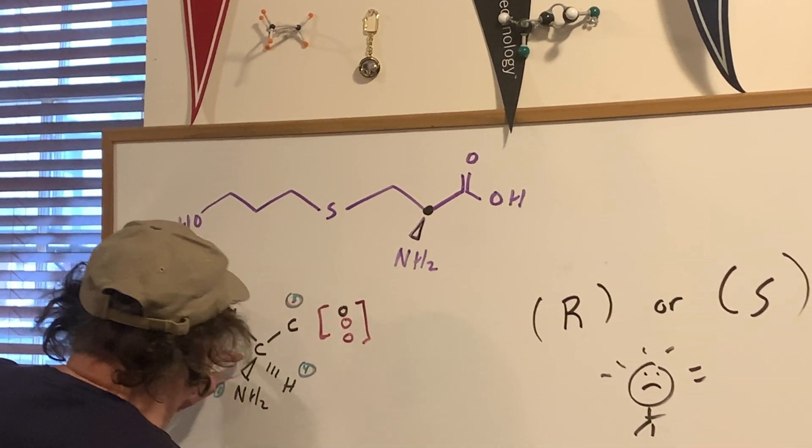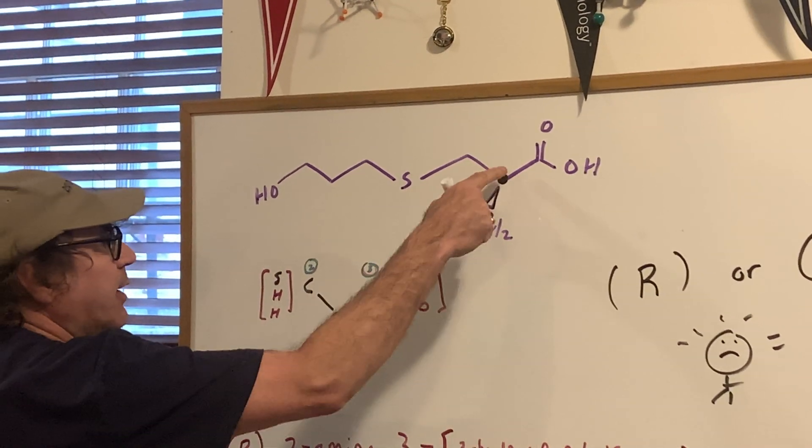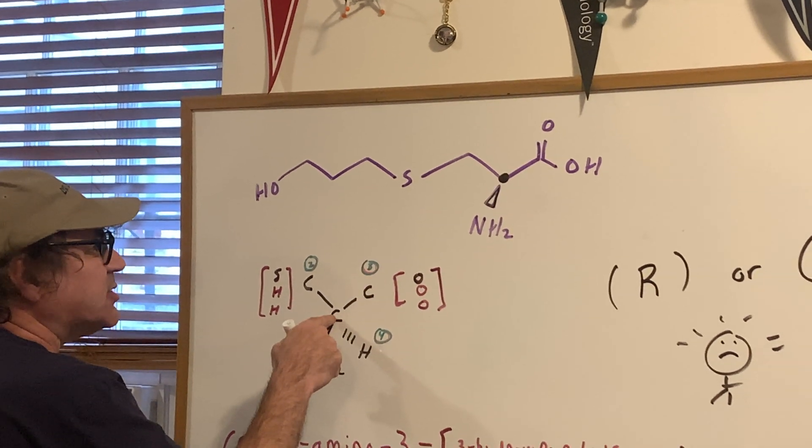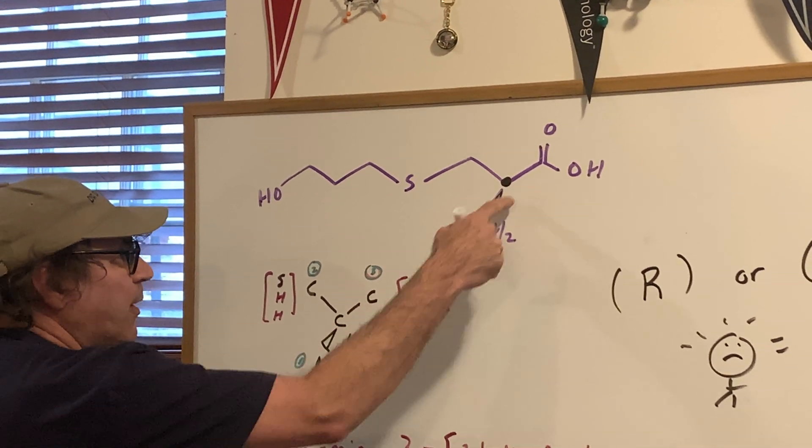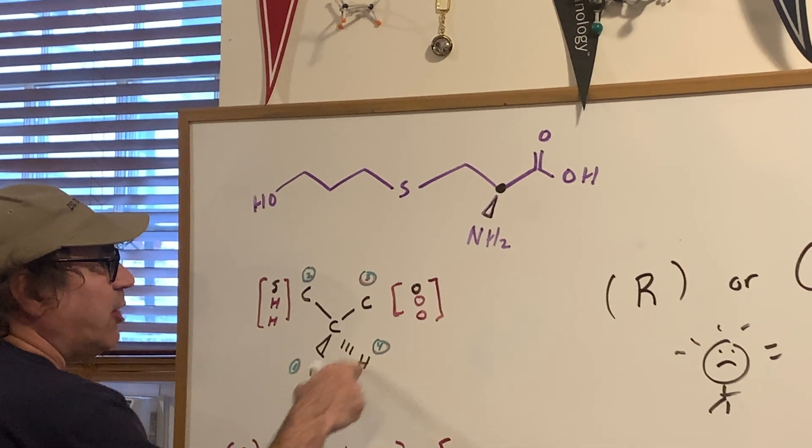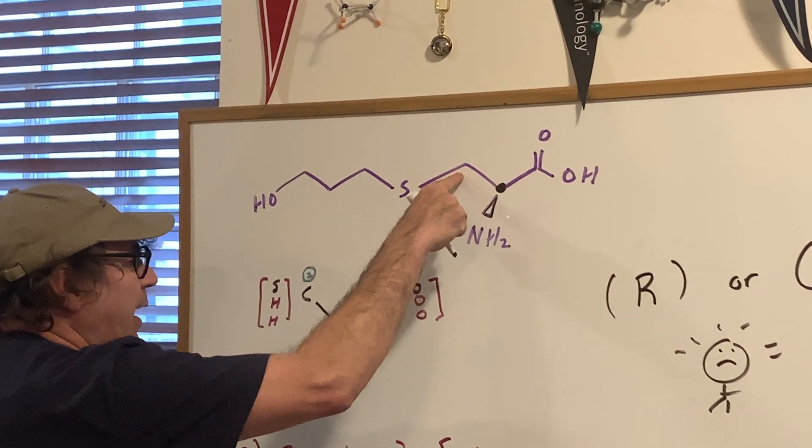So the first thing I'm going to do is go over to here and I'm going to superimpose the black dot as this carbon. Coming off it is the NH2 group. The invisible group is an H. Then you have this carbon and this carbon.